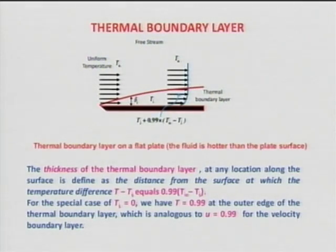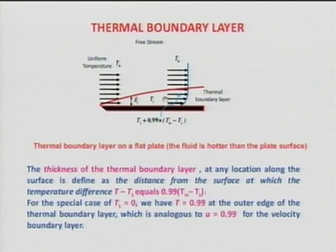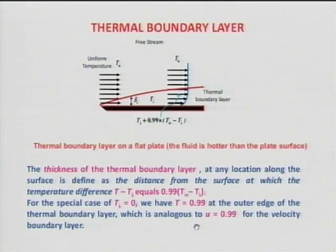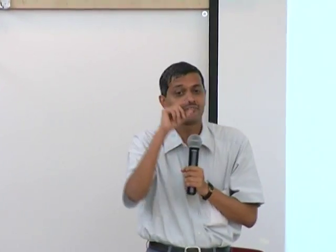The thermal boundary layer is drawn for a case where wall temperature is smaller than the free stream temperature, so heat flows from the fluid to the wall. The thickness of the thermal boundary layer at any location is defined as the distance from the surface at which the temperature difference T minus T_s equals 0.99 times the maximum possible difference.